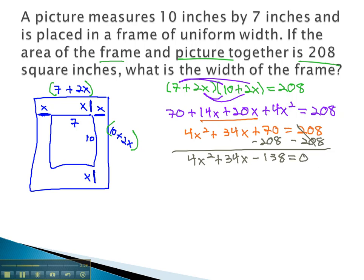We can now start factoring by factoring out the GCF of 2 to get 2x squared plus 17x minus 69 equals 0. We can continue factoring this expression to get 2x plus 23 times x minus 3 equals 0.